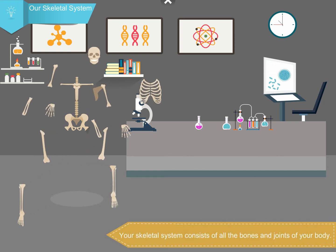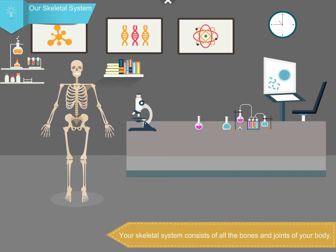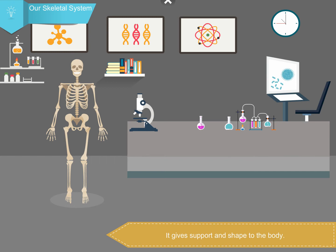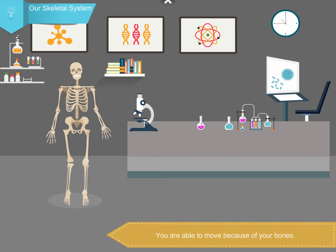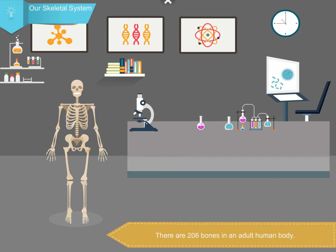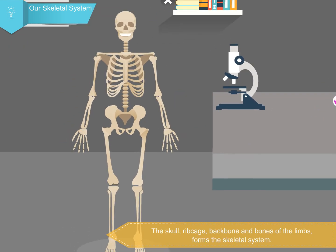Your skeletal system consists of all the bones and joints of your body. The skeleton is the framework of the body. It protects your soft internal organs, gives support and shape to the body, and you are able to move because of your bones. There are 206 bones in an adult human body.